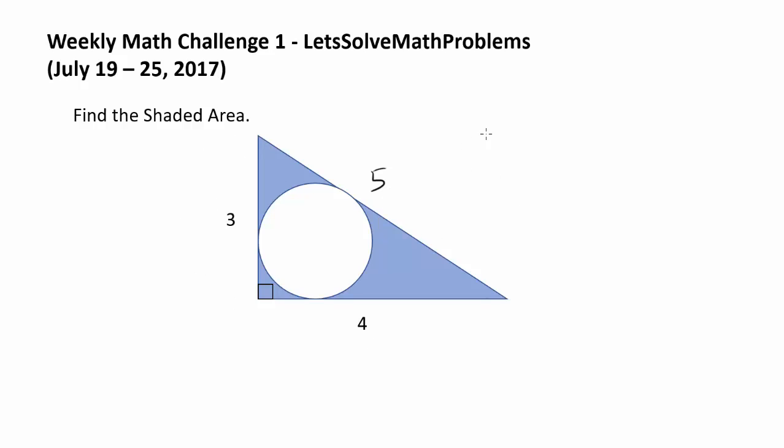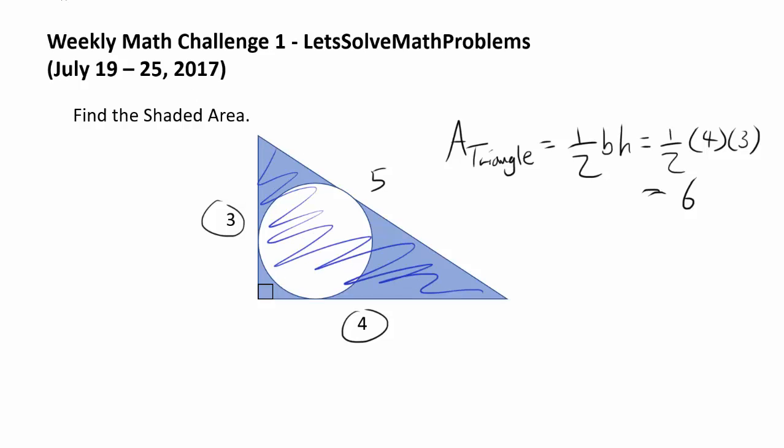So we can find the area of a triangle. What is the area of a triangle? That's 1 half times base times height. And our base is, we can let our base be 4 and we can let our height be 3. So it's going to be 1 half times 4 times 3 which gets us 6. So area of the entire triangle is 6.